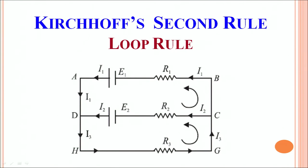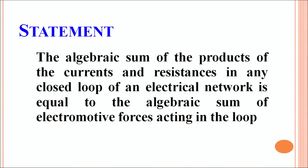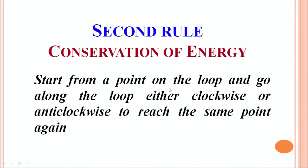Let us come to Kirchhoff's second rule. The second rule is also called the loop rule — it deals with loops in any electrical circuit. The statement of the second rule is that the algebraic sum of the products of the currents and resistances in any closed loop of an electrical network is equal to the algebraic sum of electromotive forces acting in the loop. The second rule basically verifies the conservation of energy. When analyzing a loop, you must start from one point, go along the loop either clockwise or anticlockwise, and reach back the same point.